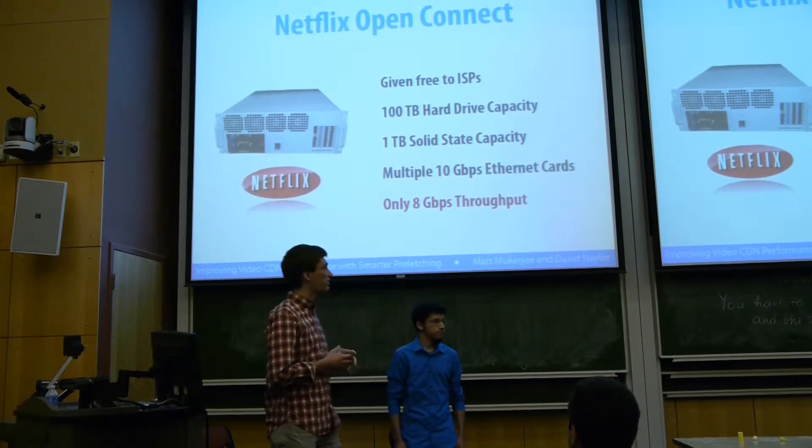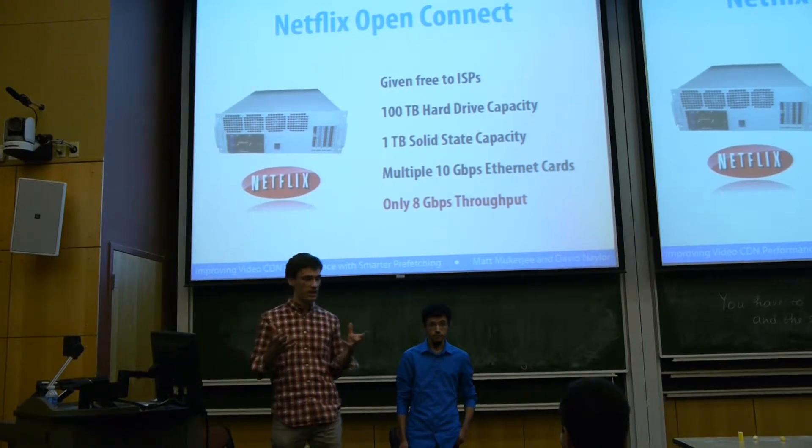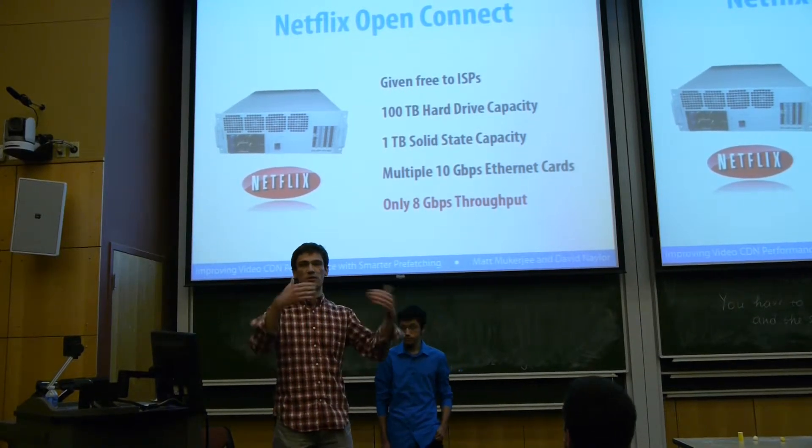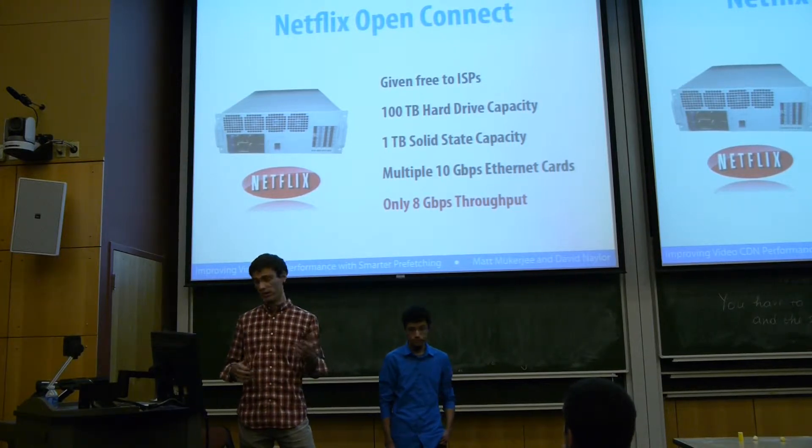We're going to focus in particular on an effort by Netflix called Open Connect, which is a program where Netflix gives free caching servers to ISPs so they can store their movies closer to end customers. But the problem is, given the hardware in these things, they should be performing with better throughput than they are.